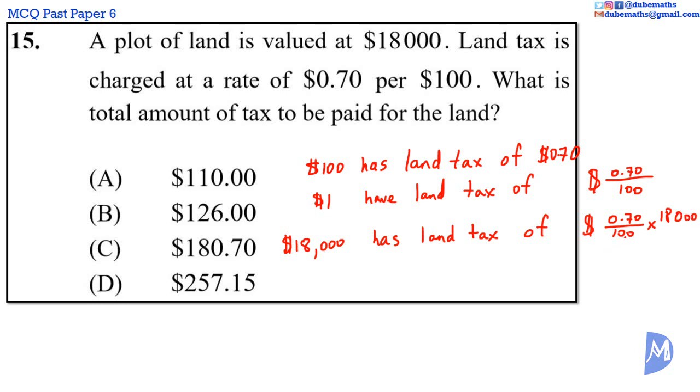Cancelling. 100 into 100 is 1. 100 into 18,000 is 180.